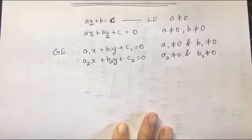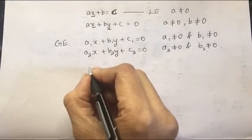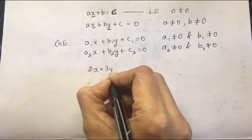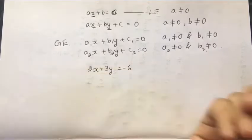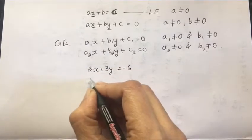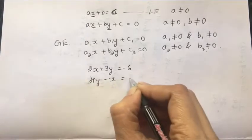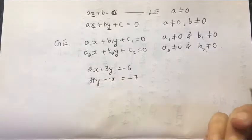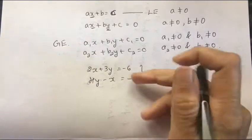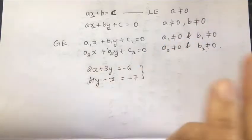For example, if I write 2x plus 3y equal to minus 6, and another equation 4y minus x equal to minus 7, then these two are a pair of linear equations with two variables.